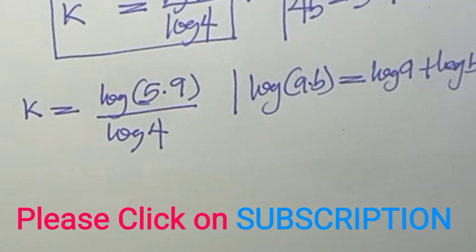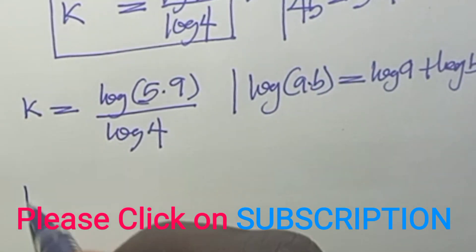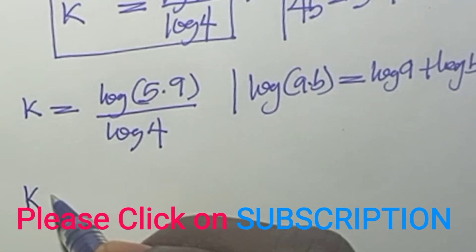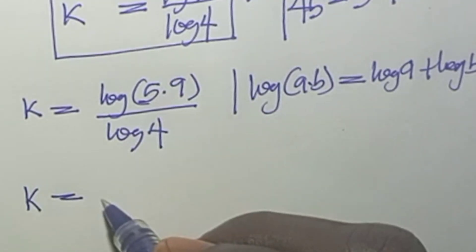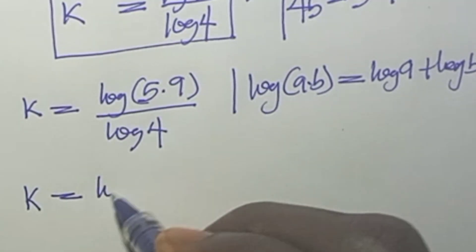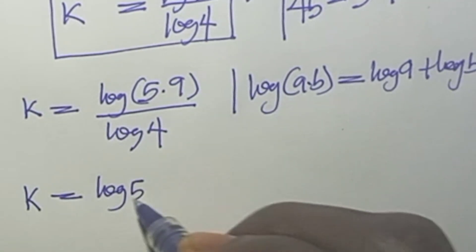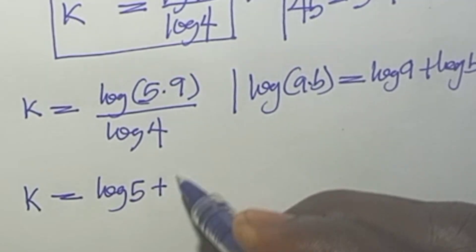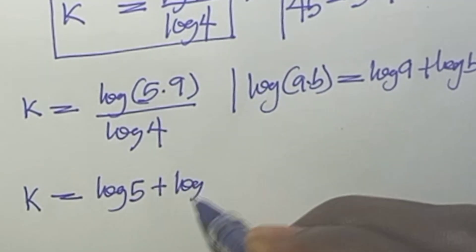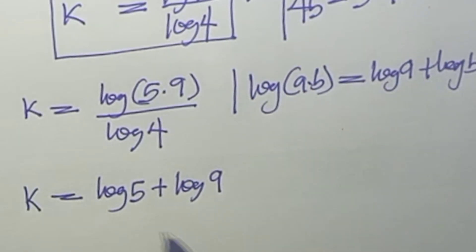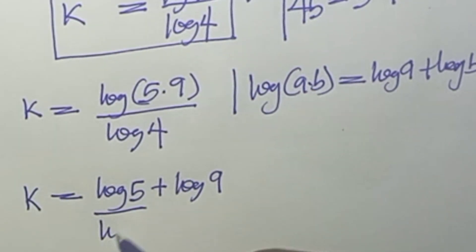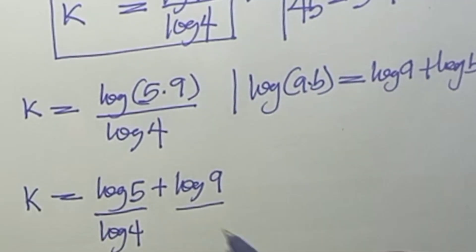We can split the logarithm of a product, writing k equals log 5 over log 4 plus log 9 over log 4, which by the change of base formula gives k equals log 5 base 4 plus log 9 base 4.